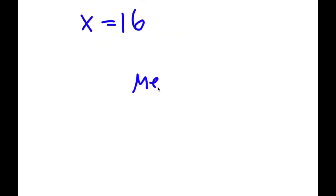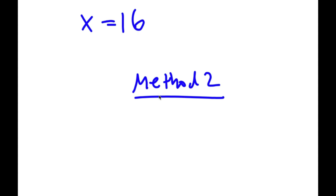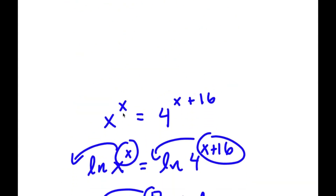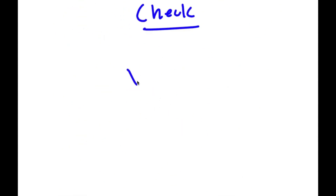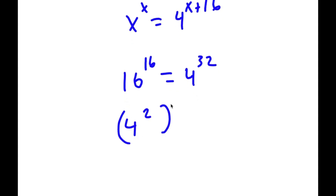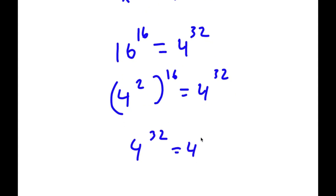For method 2 to check: I have x to the power of x equals 4 to the power of x plus 16, with x equals 16. So I have 16 to the power of 16 is equal to 4 to the power of 32. Since 16 is 4 squared, I have 4 squared to the power of 16, which equals 4 to the power of 32. So 4 to the power of 32 is equal to 4 to the power of 32. ✓